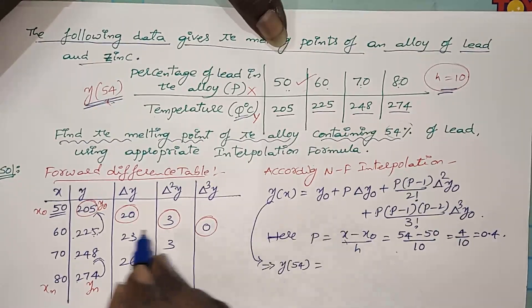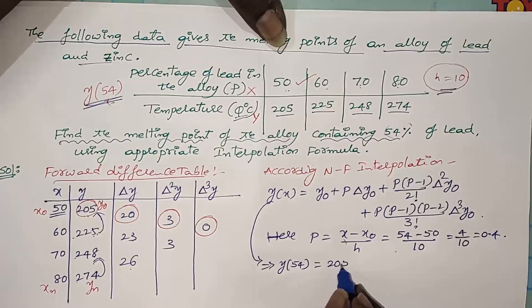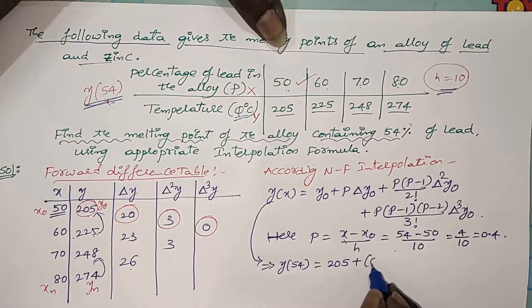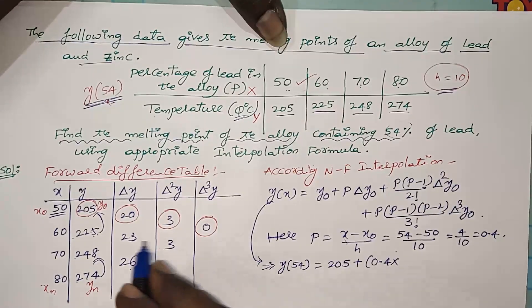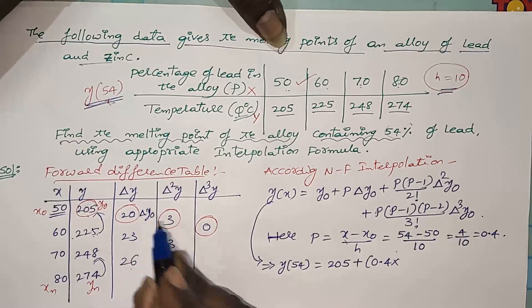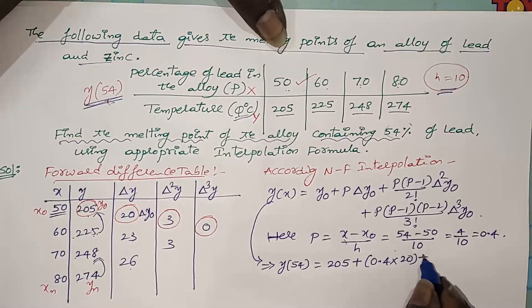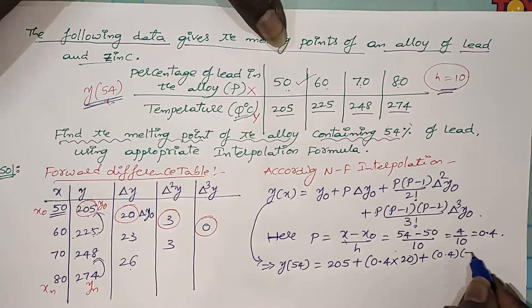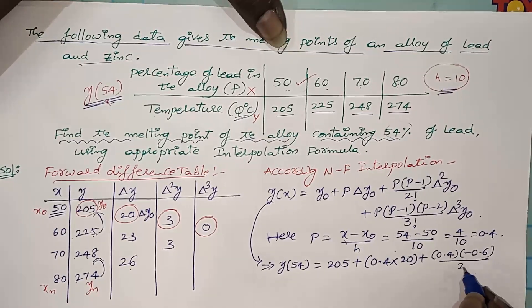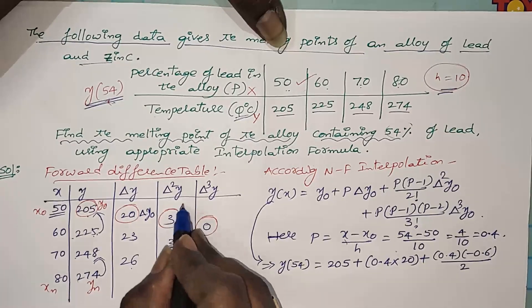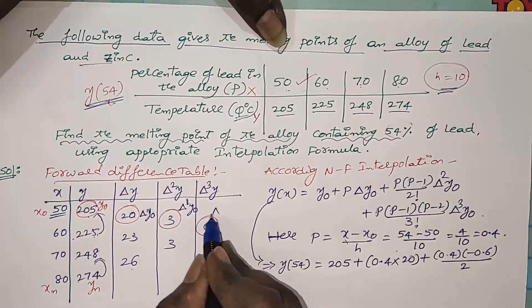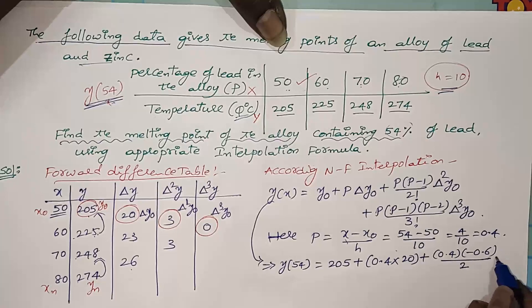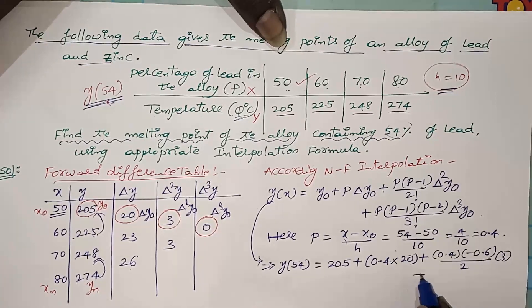Y of 54 equals Y naught which is 205 plus P which is 0.4 into delta Y naught which is 20, plus P into P minus 1, 0.4 into 0.4 minus 1 which is minus 0.6 by 2 factorial, into delta square Y naught which is 3, and the last term with delta cube Y naught is 0.